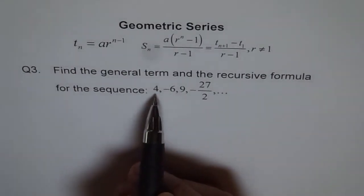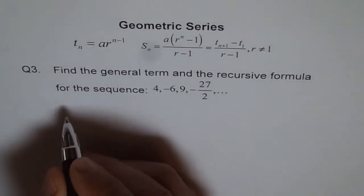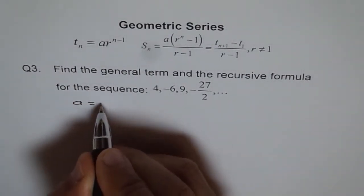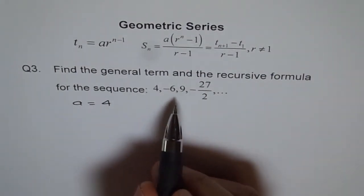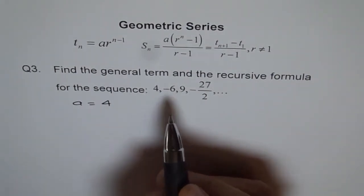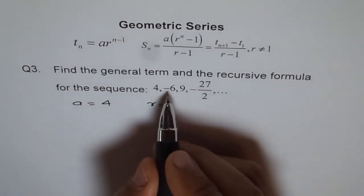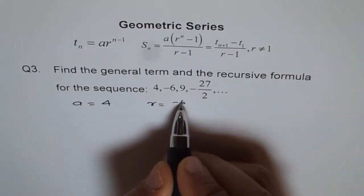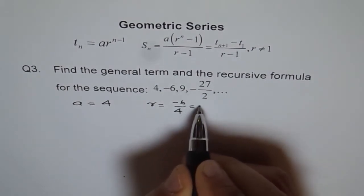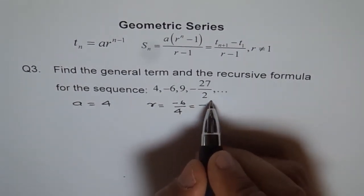Well, the first term we know is 4, so we can write A equals 4. Now we can see that the ratio is the same. So we can find the ratio R, which is equal to minus 6 over 4, which is minus 3 over 2.